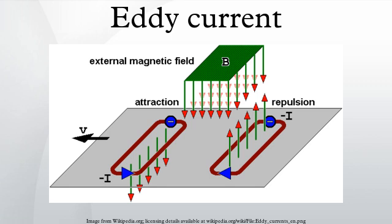Eddy currents are created when a conductor experiences changes in the magnetic field. If either the conductor is moving through a steady magnetic field, or the magnetic field is changing around a stationary conductor, eddy currents will occur in the conductor. Both effects are present when a conductor moves through a varying magnetic field, as is the case at the top and bottom edges of the magnetized region shown in the diagram.